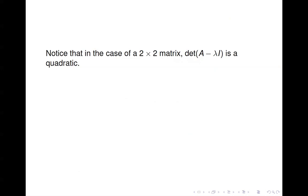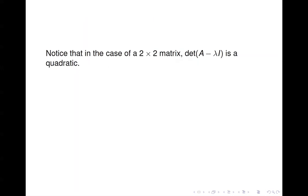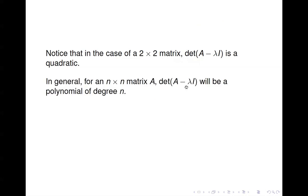We ended up with lambda squared minus 6 lambda minus 16 — that's a quadratic function. So for a 2 by 2 matrix, we get a quadratic. In general, if you have an n by n matrix, then the determinant of A minus lambda I will be a polynomial of degree n. So for a 3 by 3, you get a cubic function; 4 by 4, you get a degree 4 polynomial, and so forth.